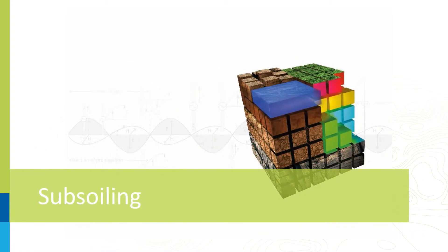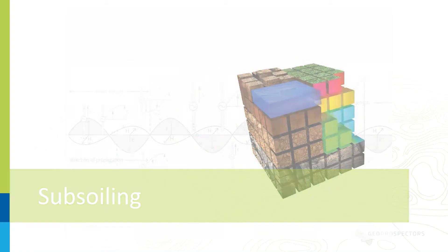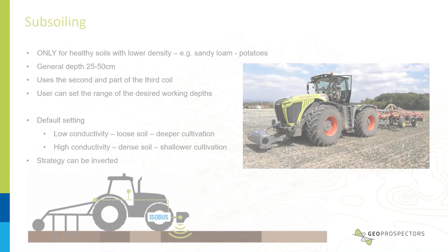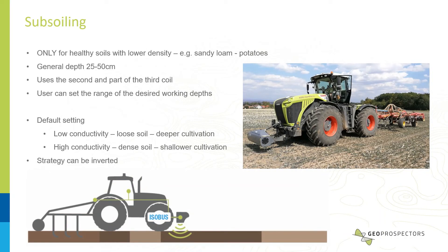Subsoiling, as the other soil treatment, is advised for use on lighter soils at an applicable depth of 25 to 50 cm. This algorithm uses the second and part of the third coil in depth regulation. By this strategy, exactly the same parameters and details can be set as with shallow cultivation — the only difference is that it operates in a deeper region.